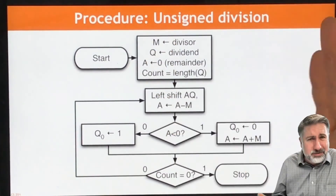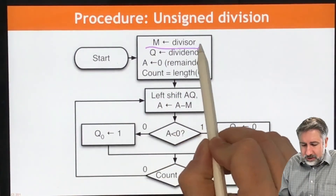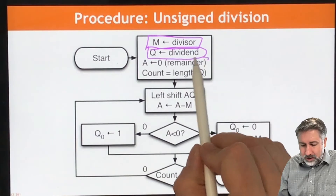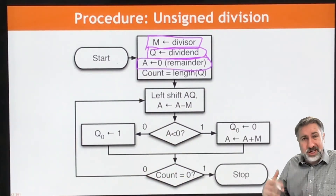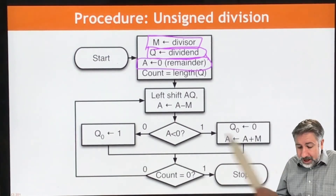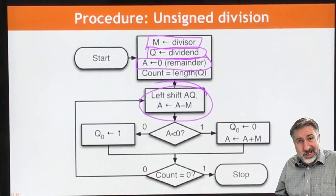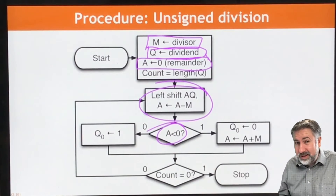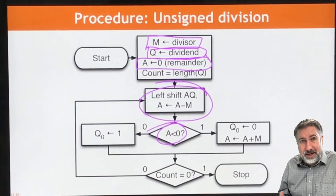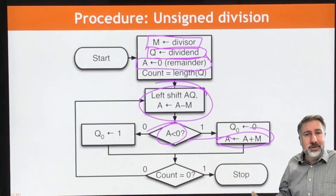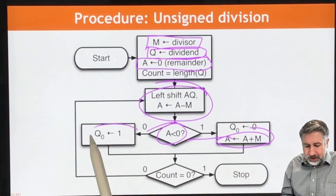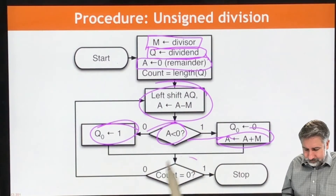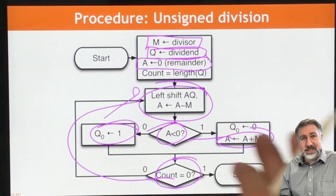We initialize the divisor into a register called M, the dividend into a register called Q, and a partial remainder into a register called A. We set our count to N. Then first we do our shift, and then our subtraction. If the subtraction results in a negative value — and we can check that just by looking at the top bit of that result — then that means that value was too big and we have to add it back again. If it was positive, the value wasn't too big, we don't add it back, and we set the bit of our partial quotient accordingly. Then we check our count and go back.